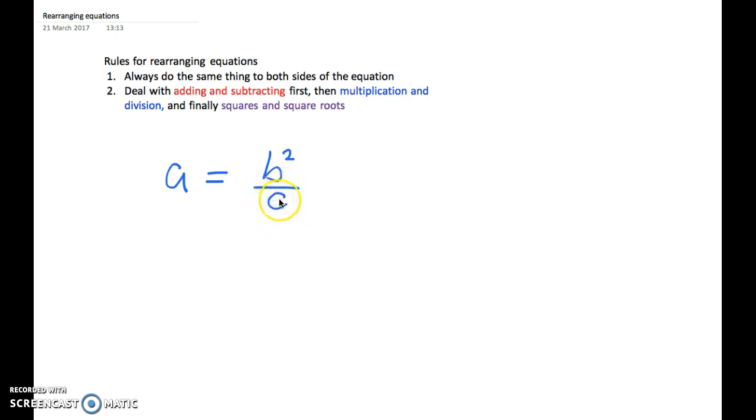How do we get rid of this division? At the moment we're dividing by C. To cancel that, we can multiply by C. So we can write a times C. Let's do the same to both sides: equals b squared over C times C. Those two now cancel and we are left with b squared equals a times C.